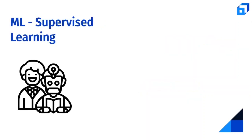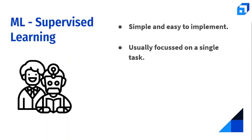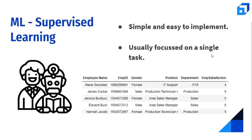Supervised learning algorithms are the most commonly used type — they are simple and easy to implement. Input is in the form of labeled example pairs, usually in a text spreadsheet or CSV file. These label-example pairs are fed one by one to the learning algorithm, allowing it to predict the right label for each example. An example dataset would include attributes like employee name, ID, gender, position, department, and satisfaction score.